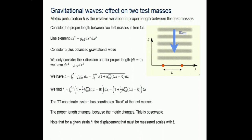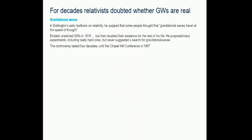Since ΔL is easier to measure when L is large - you simply multiply the strain by L - having long arms is critical. Many people doubted the existence of gravitational waves. Eddington stated he thought they traveled at the speed of thought. Even Einstein in 1936 tried to publish that they did not exist; Robertson corrected that. This controversy lasted until 1957.